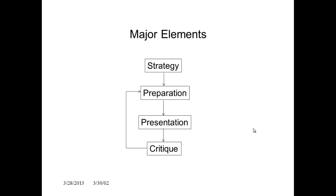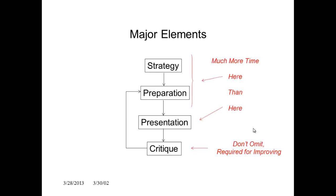What are the major elements in a presentation? There are really four. The first one is your strategy. The second one is the preparation. The third one is the presentation itself. And the fourth one is the critique, which oftentimes people fail to do because the peak of activity is the presentation itself, and it's a lot of trouble to come back and revisit a presentation that's already made. We're going to spend a lot more time on the strategy and preparation part, and force ourselves not to omit the critique, which is really required in order to improve your presentation skills over time.